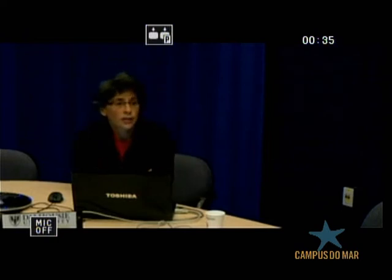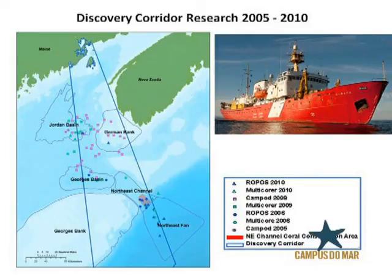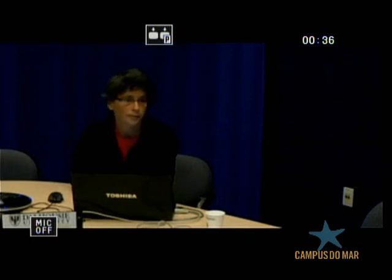In this figure you can see the corridor outlined in blue lines, and each dot corresponds to a different sampling station sampled over the years since 2005. We have gone on research cruises in 2005, 2006, 2009, and 2010 on the government vessel Hudson that you see on the right-hand side.